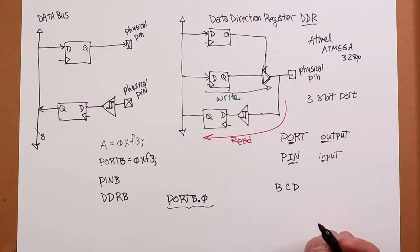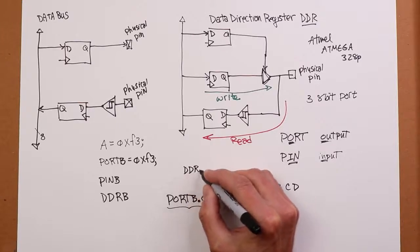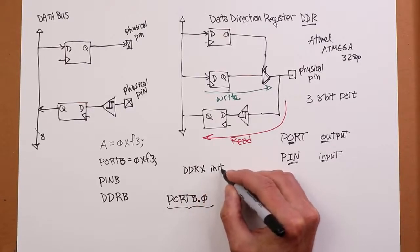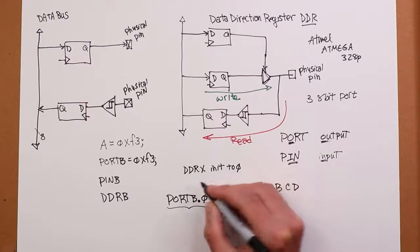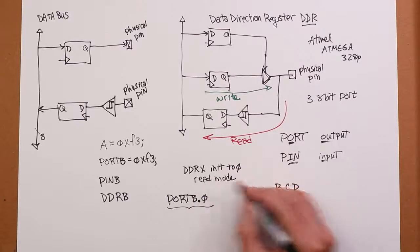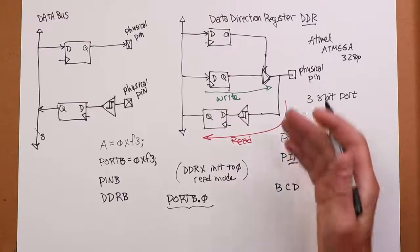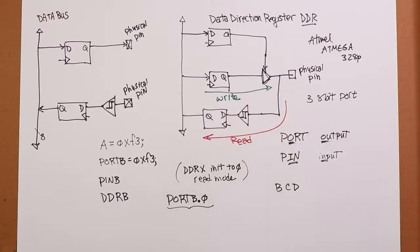Now, by default, all ports are initialized to read mode, in mode. In other words, the DDRs, so I'll just call it DDRX, are basically initialized to 0. All right, so that's read mode. All right, so if you decide you're going to use a particular bit for output, you're going to have to first set the data direction register to output mode. In other words, you're going to have to set that bit, set that bit high.